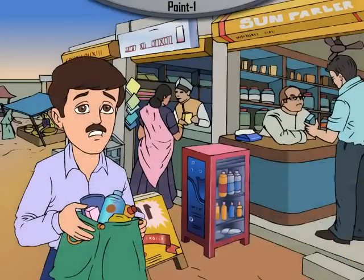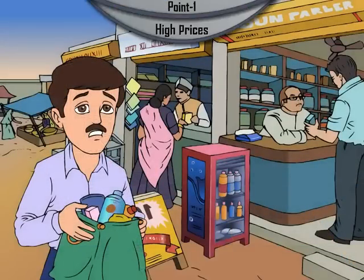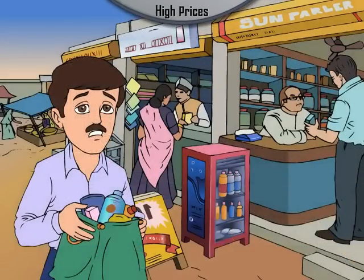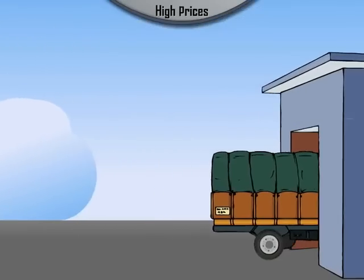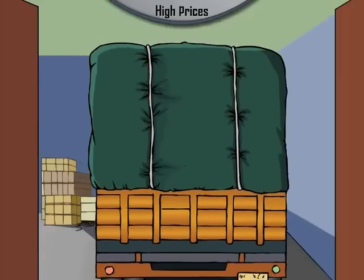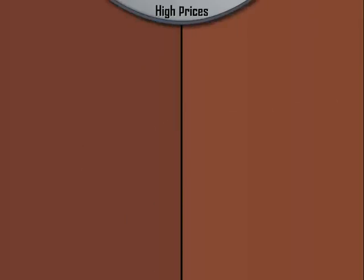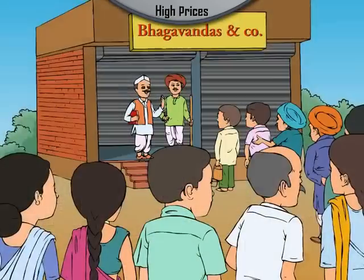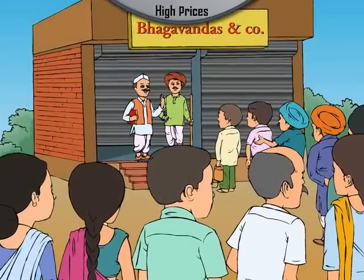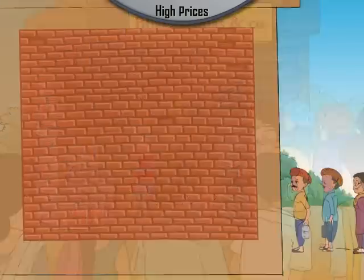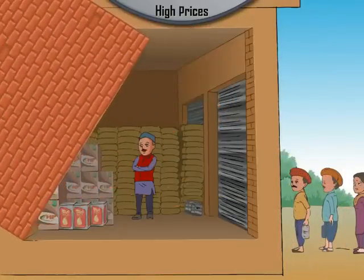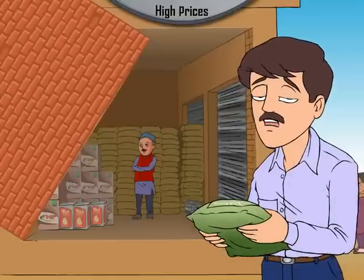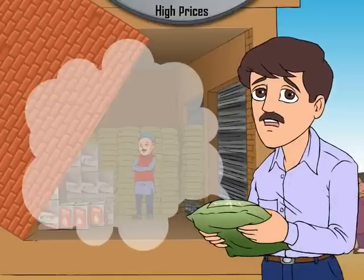Point 1: High Prices. Sometimes, an artificial shortage of commodities is created in the market. The producers and suppliers do not release enough supplies of goods in the market, so consumers are forced to buy the commodities at a high price.